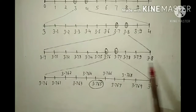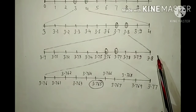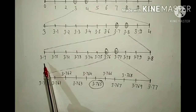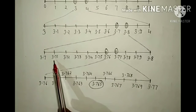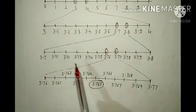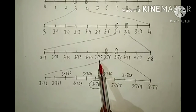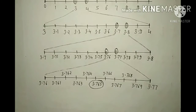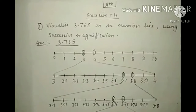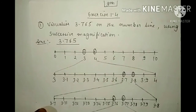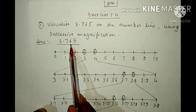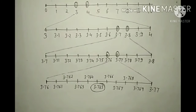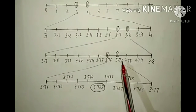Now below that, make another number line. Write 3.7 in the left corner and 3.8 in the right corner. Write the numbers between 3.7 and 3.8: 3.71, 3.72, 3.73, 3.74, 3.75, 3.76, 3.77, 3.78, 3.79, then 3.8. Our number 3.765 is greater than 3.76 and less than 3.77.